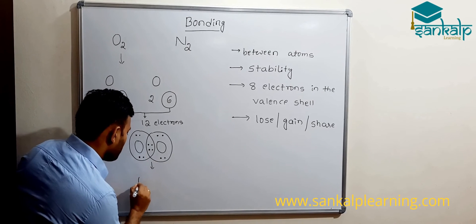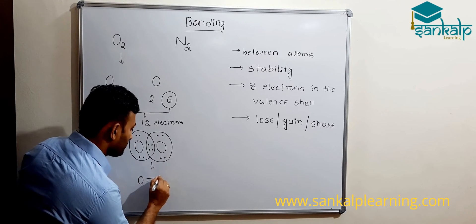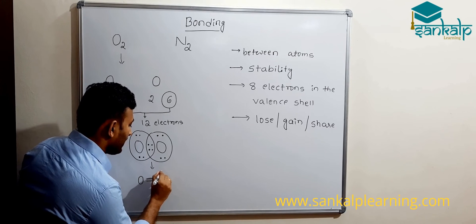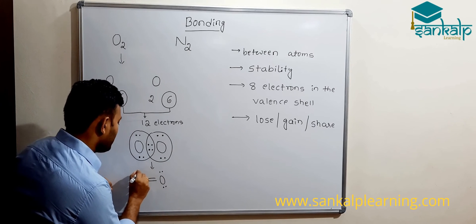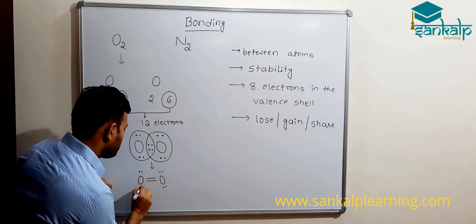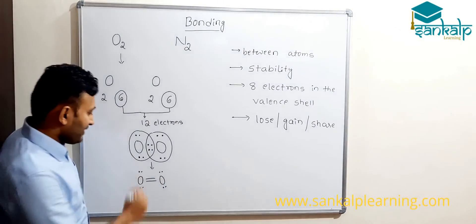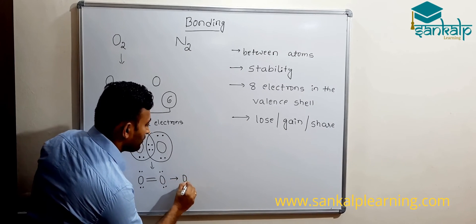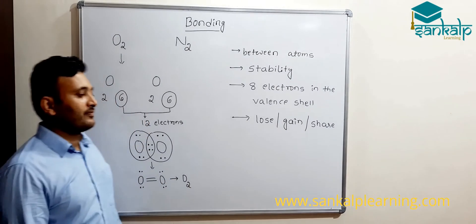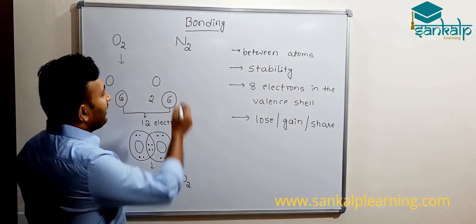We call it a double bond: O=O. Each oxygen atom has two pairs of electrons that are not shared — they are called lone pairs. This is what we simply write as O2.